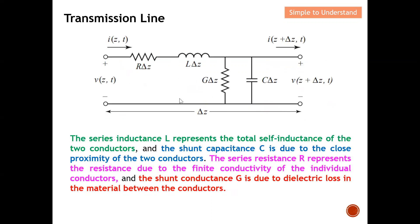The series L represents the total self-inductance of the two conductors. The shunt C is due to the close proximity of the two conductors — when they are too close together, they exhibit capacitor-like behavior. The series R represents the resistance due to the finite conductivity of the individual conductors, accounting for conductor loss. The shunt conductance G is due to dielectric loss in the material between the conductors.